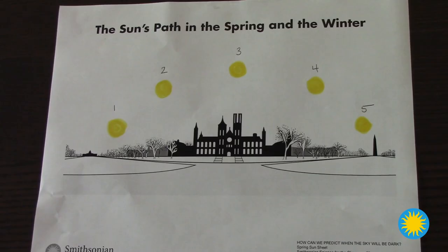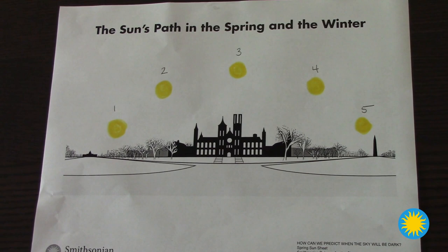Hi everyone! In the last video I said to look at photos we took of the sun and draw the position of the sun in the sky at five different times of the day. Did you draw a pattern like this? How does this pattern compare to the pattern that you made with the flashlight? You can pause the video to think about it or talk about it with somebody.